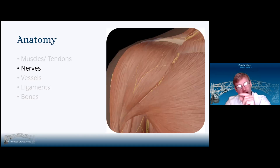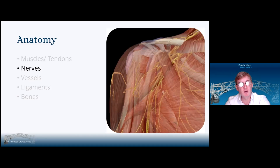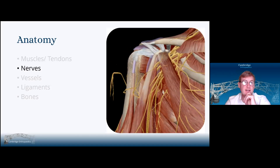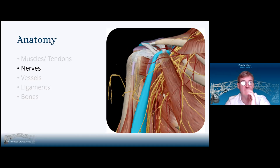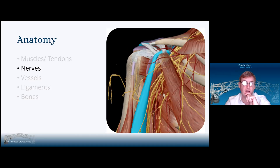There are no real cutaneous nerves that you need to worry about in the delta-pectoral approach, and most of the nervous concerns are related to the brachial plexus, and they sit deeper to most of the muscles. It's just the idea where structures medial to the conjoint tendon, medial to coracoid, medial to short head of biceps, are the suicide side, because that's where all the vessels and all the nerves are.